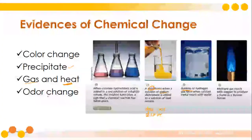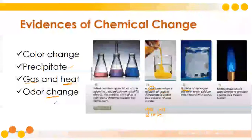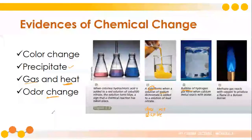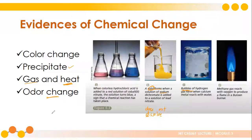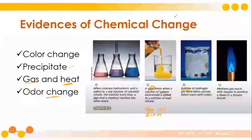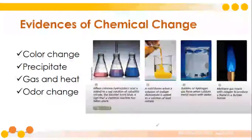Odor change is also a prominent chemical change. For example, rotten eggs produce a pungent smell, and that pungent smell indicates that there is a change in the chemical makeup of the egg. You can observe these chemical changes more in the laboratory as we do our laboratory activity.